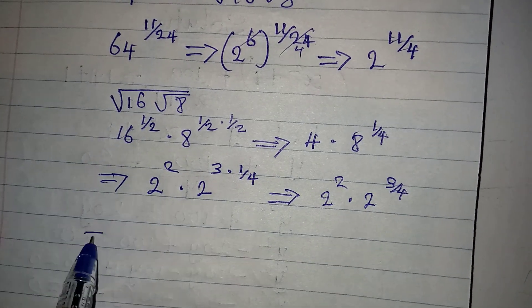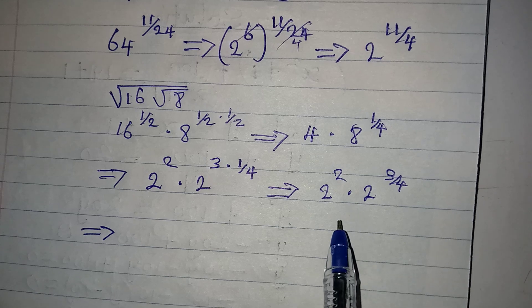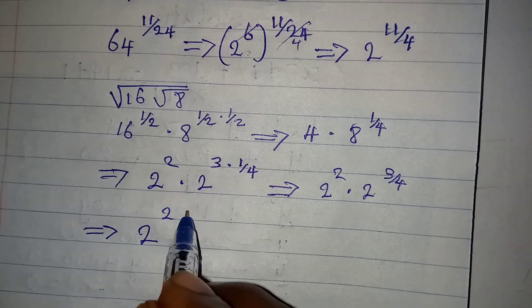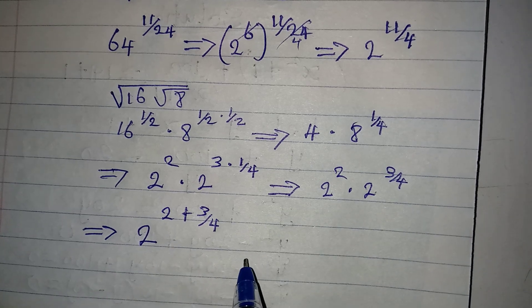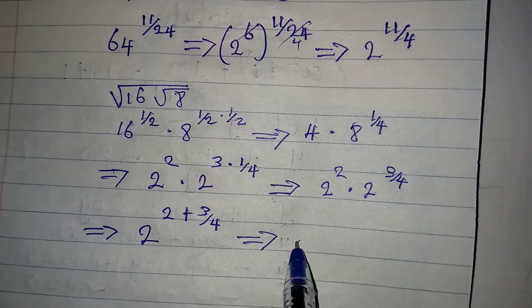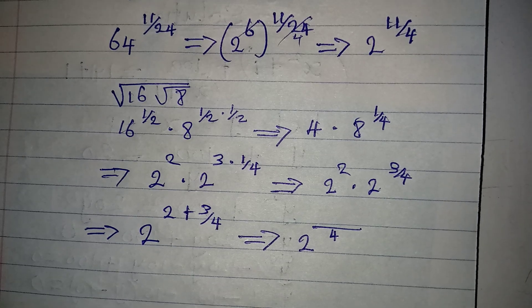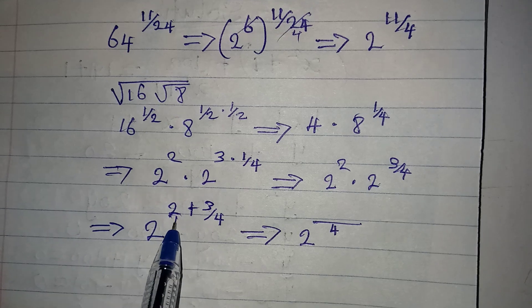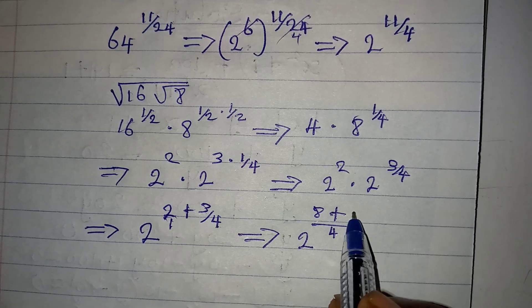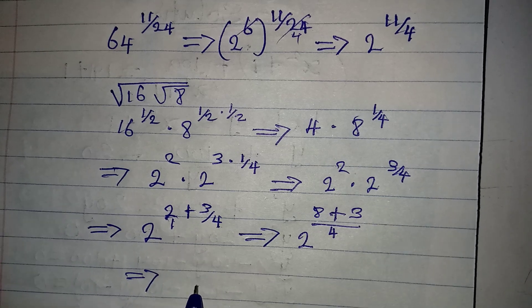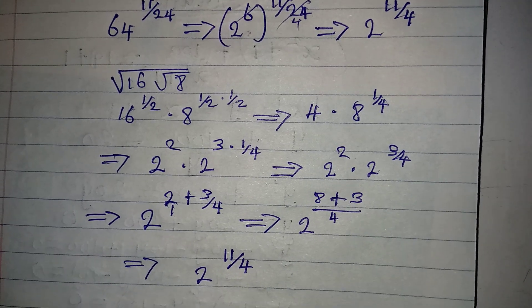Following the rule of indices — same base, pick one and add the powers — we have 2 to the power of 2 multiplied by 2 to the power of 3 over 4. Then we pick base 2 and add 2 plus 3 over 4. The LCM is 4: 4 divided by 1 is 4, times 2 is 8; 4 divided by 4 is 1, times 3 is 3. So we have 2 to the power of 8 plus 3 is 11, over 4.